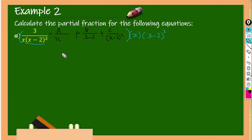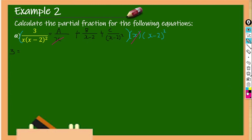First, I would like to multiply the question by x and x minus 2 squared, so we can cancel those terms. You will get 3 on the left. Then for the A term: A over x multiplied by x and x minus 2 squared — the x cancels, giving A multiplied with x minus 2 squared.